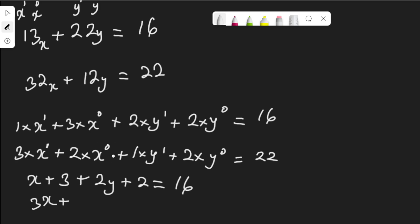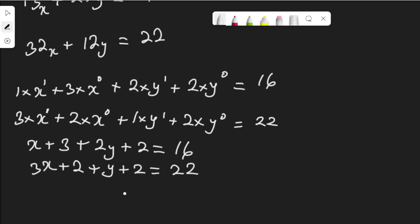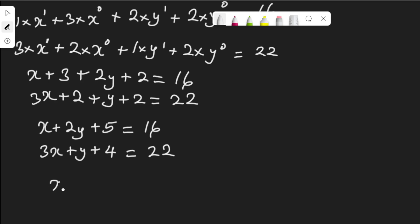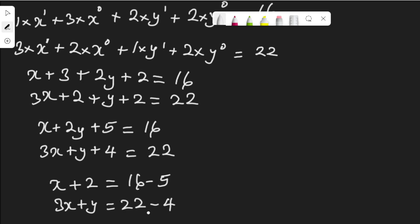Since x to the power 0 is 1, the first equation simplifies. Let's collect like terms — the constant terms 3 and 2 can be added. Bringing x and y together: x plus 2y, and 3 plus 2 is 5, so x plus 2y plus 5 equals 16. For the second equation: 3x plus y, and 2 plus 2 is 4, so 3x plus y plus 4 equals 22. Therefore x plus 2y equals 16 minus 5, and 3x plus y equals 22 minus 4.